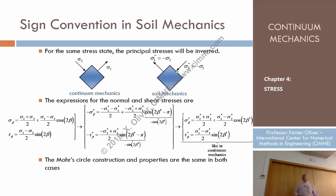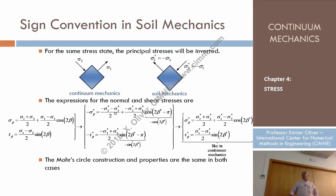Now let's consider the formulas that give the stresses on a certain plane, starting from the continuum mechanics criterion. To apply the soil mechanics criterion, replace sigma_beta with minus sigma_beta*, tau_beta with minus tau_beta*, sigma 1 with minus sigma 2*, and sigma 2 with minus sigma 1*. The angle beta with sigma 1 becomes 2 beta* minus π, because the principal stress directions have changed by 90°.